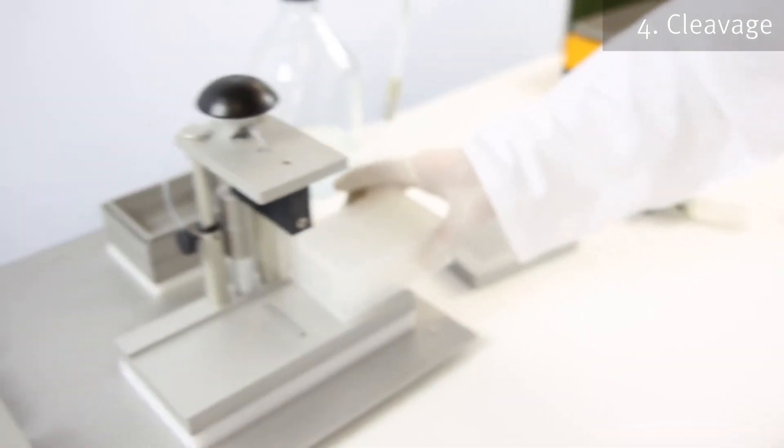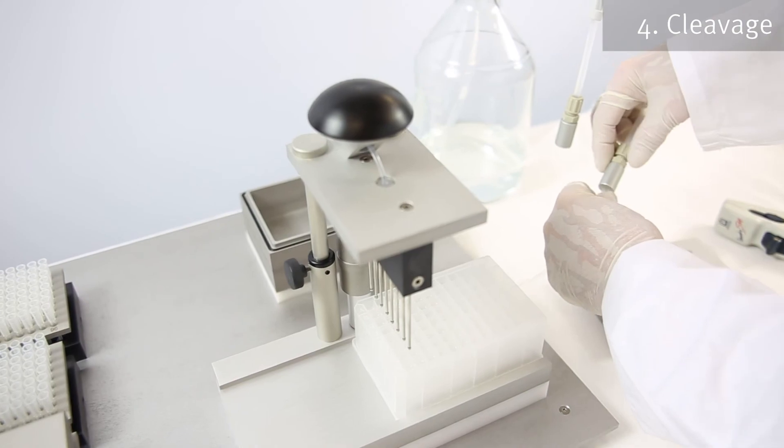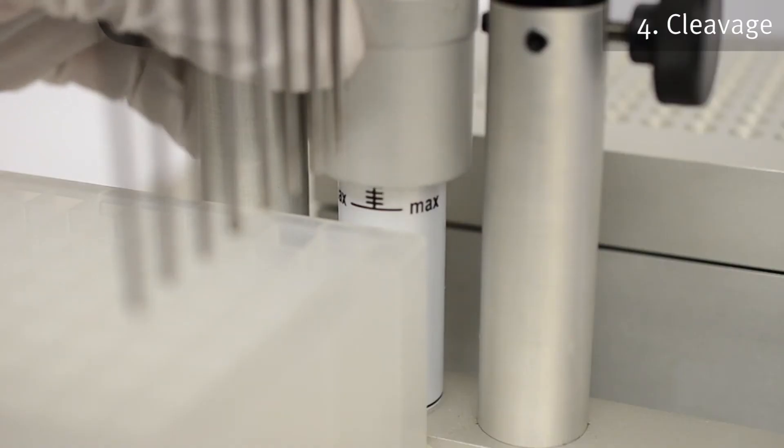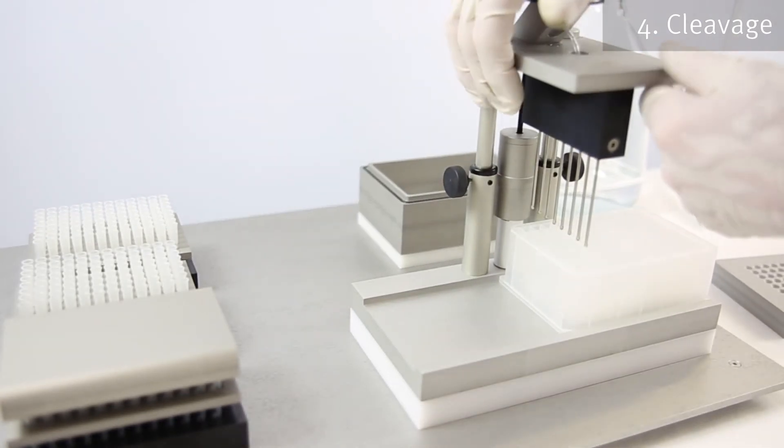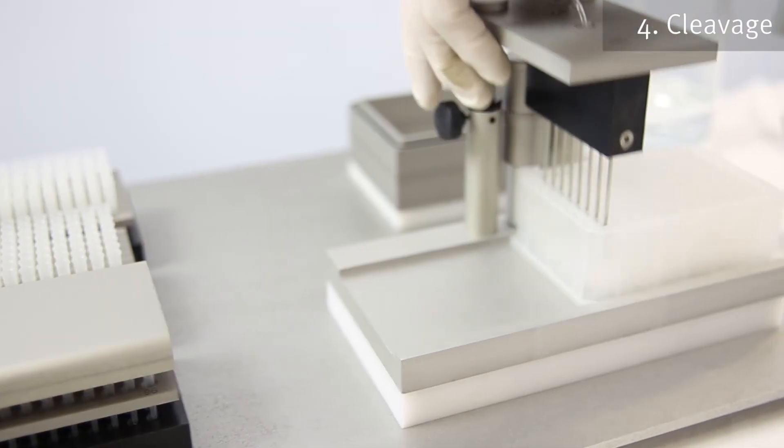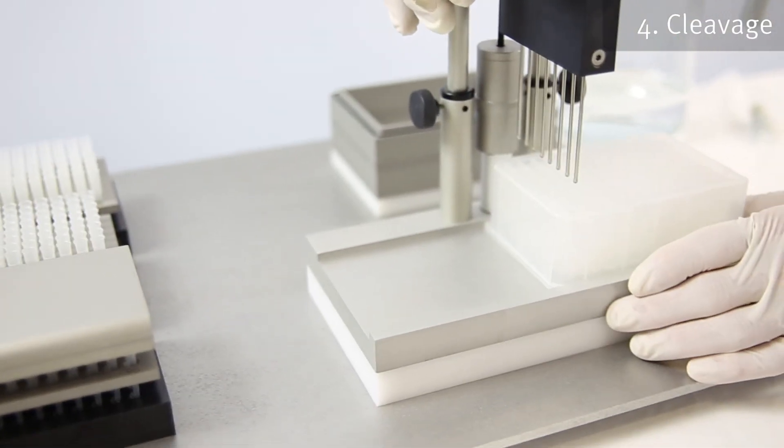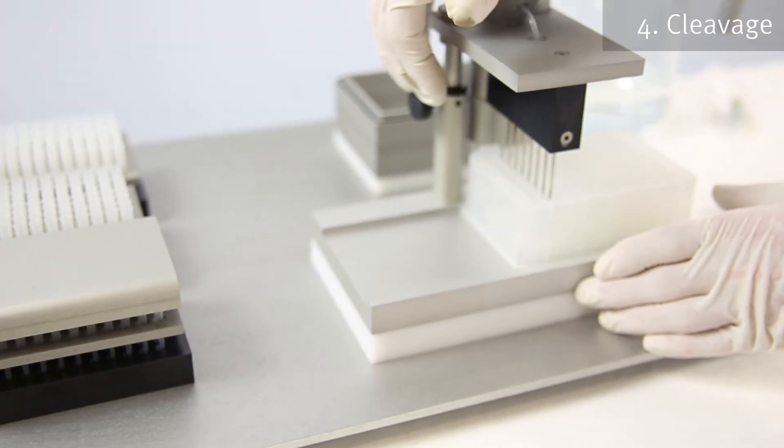After spinning the deep well plate, the aspirator is now connected to a vacuum source and adjusted to the correct height for removal of the supernatant. Remove the supernatant from the tip reactors starting from the top by slowly pressing down on the aspirator dispenser, being careful not to disturb the peptide pellets contained in the deep well plate.